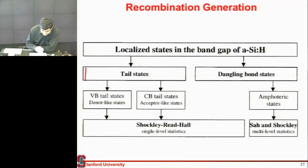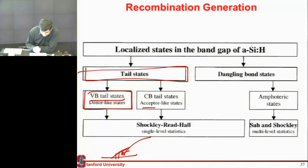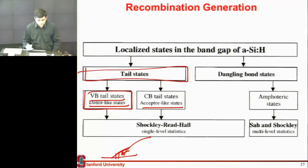I have these tail states which can be represented as either valence band or conduction band tail states. The tail states close to the conduction band can easily absorb electrons, so they act like an acceptor. Similarly, the tail states close to the valence band can absorb a hole, so they act as donor states.